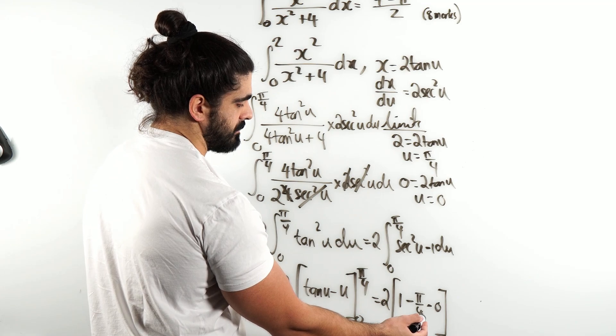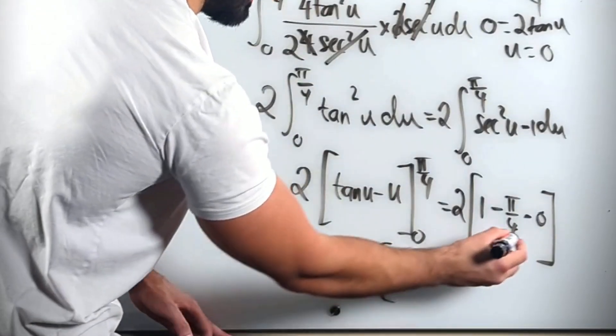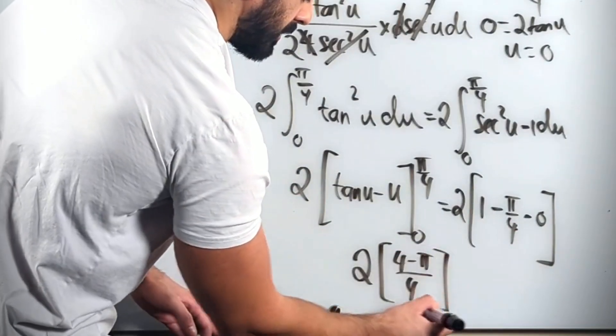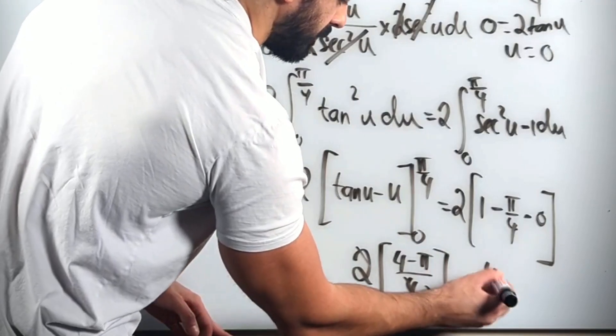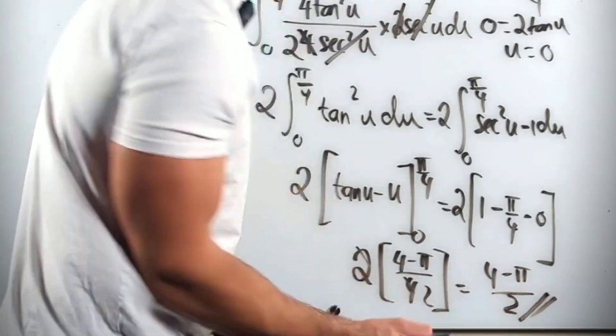So the next thing I'm going to do is just do my common denominator here. You get 2 times (4 - π)/4. Then 2 cancels 4 twice. (4 - π)/2. Nice.